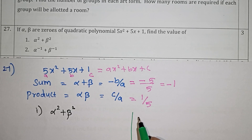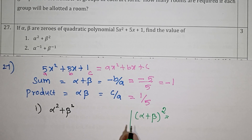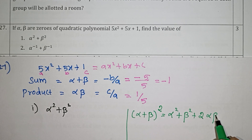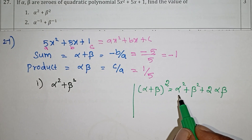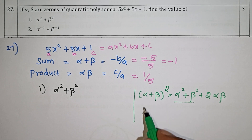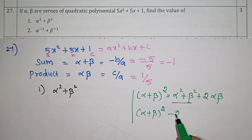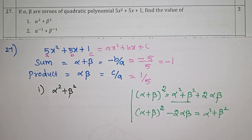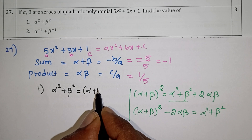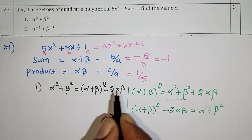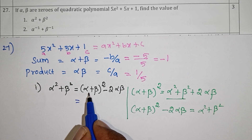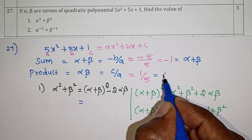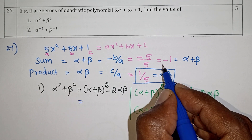Alpha squared plus beta squared formula: using (a + b)² = a² + b² + 2ab, we get alpha² + beta² = (alpha + beta)² − 2·alpha·beta. This is the basic formula for finding alpha² + beta² from the sum and product of roots.